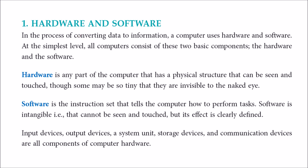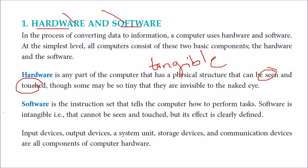We'll talk about components with respect to hardware and software. At the simplest level, the computer has two basic components: hardware and software. Hardware is defined by its physical structure — it can be seen or touched, so it is tangible. Software is intangible — you cannot touch it or feel it, but you can clearly see its effects.